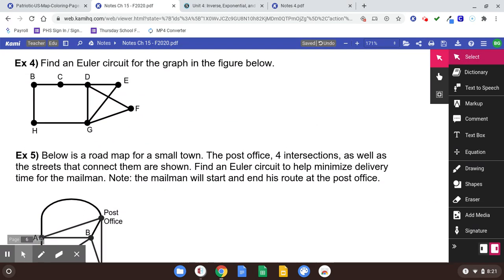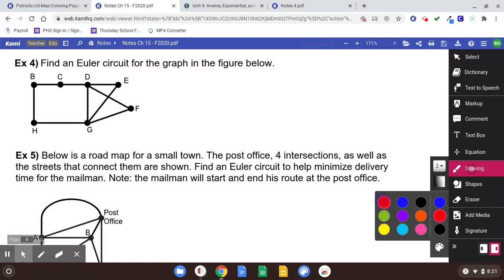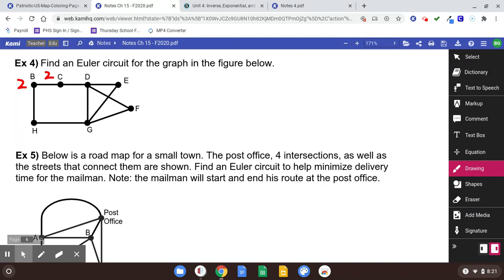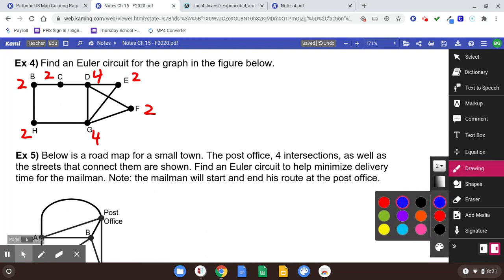Number four. Find an Euler circuit for the graph in the figure below. Well, first you want to decide if one exists. And how we know one exists is if all of the vertices have even degree. There's a two and a two and a four and a two and a two and a four and a two. So they're all even. Therefore, we know that there is an Euler circuit.